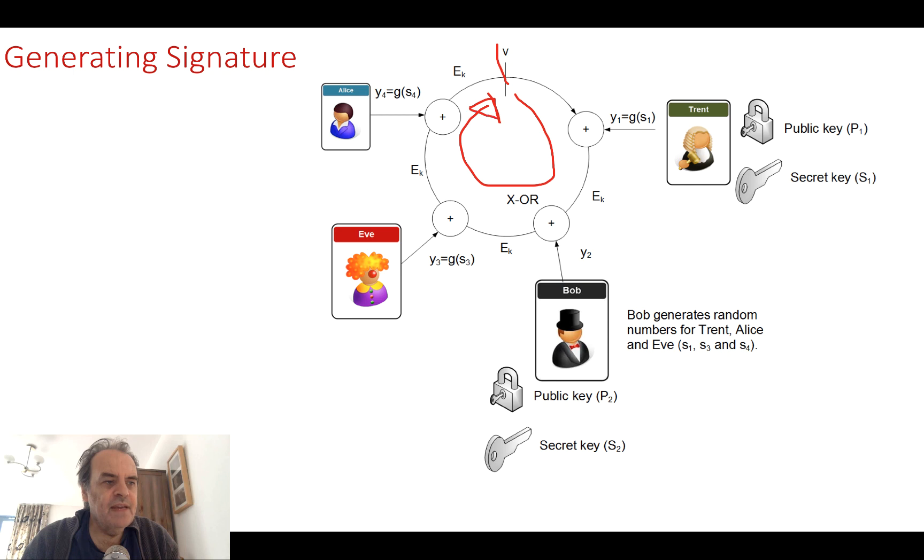This is how ring signatures actually work. Basically what happens is that we go around a loop. At the very end we end up with the original value, but only knowing the right entities can we actually end up with this original value. Each of the entities have a public and a private or secret key. We define that as capital P and capital S. So Trent has P1, S1, Bob has P2, S2, and so on.